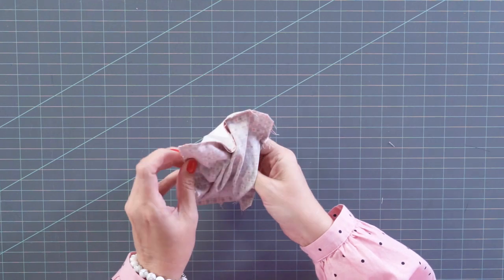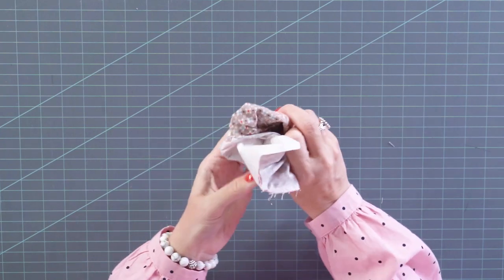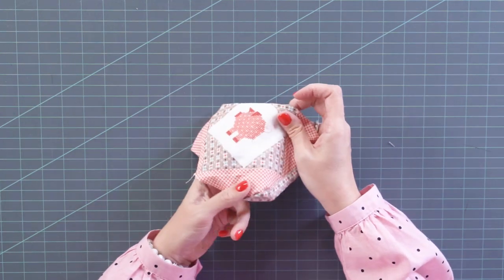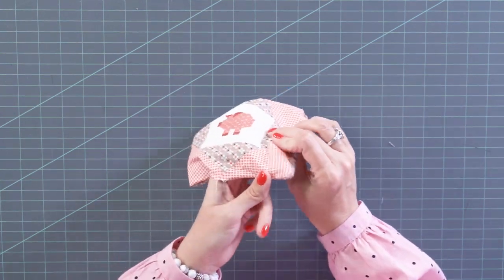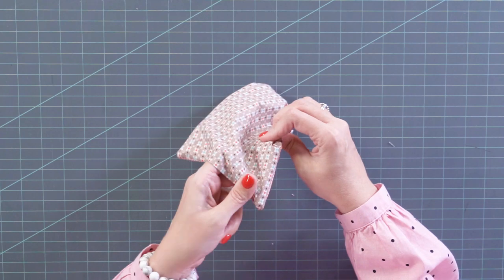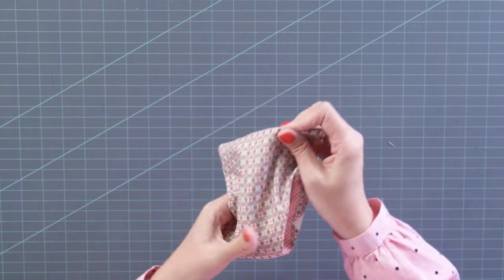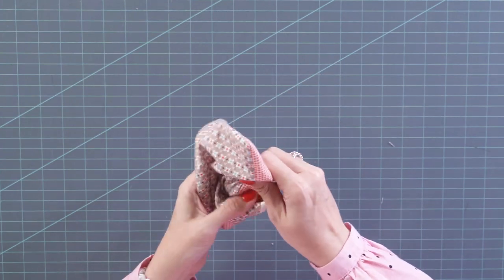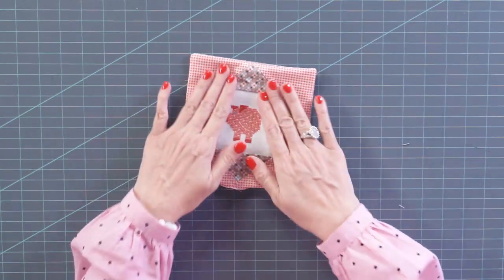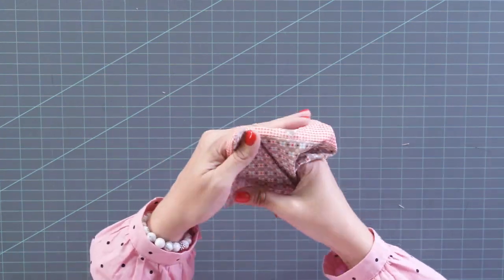Then we're just gonna turn this right side out. Our little pig is so cute. I'm going to just use my finger to pop the corners out. We're gonna put rickrack around the edge, so it doesn't have to be perfect. So just get this nice and kind of even.